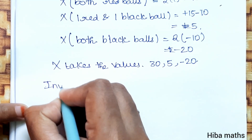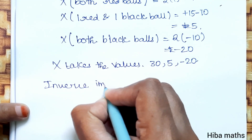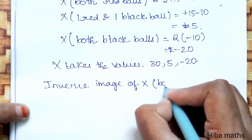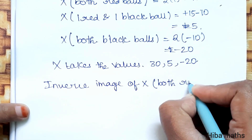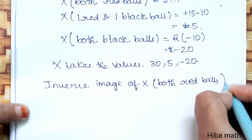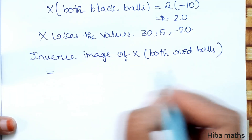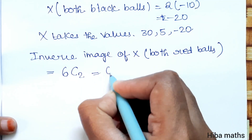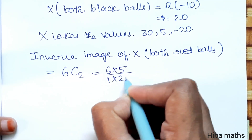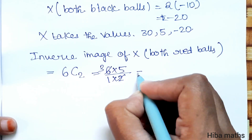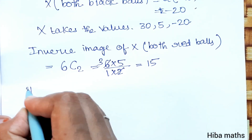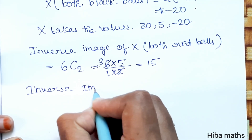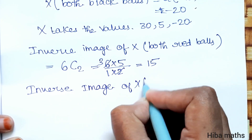Now we find the inverse images. For x = 30 (both red): 6C2 = 6 × 5 / (1 × 2) = 15. For x = 5 (1 red, 1 black): 6C1 × 8C1 = 6 × 8 = 48.